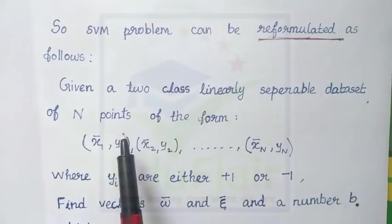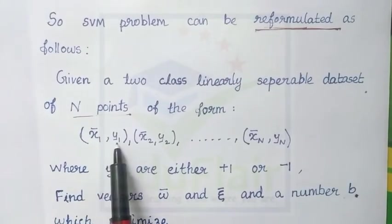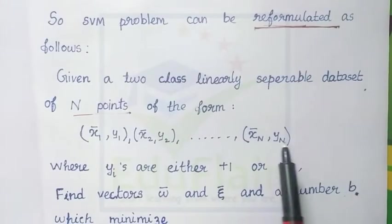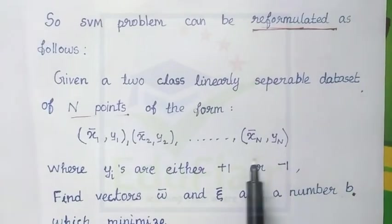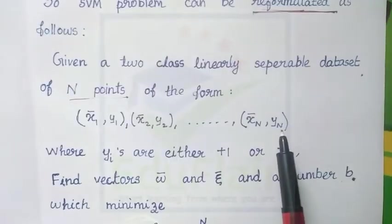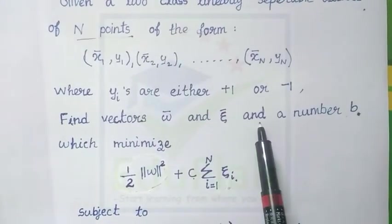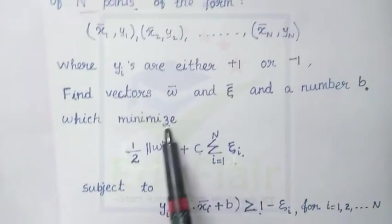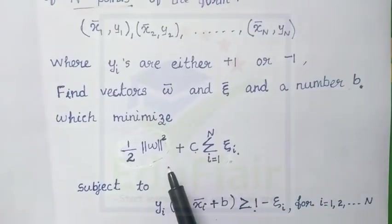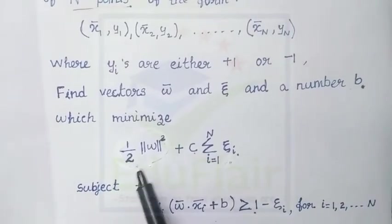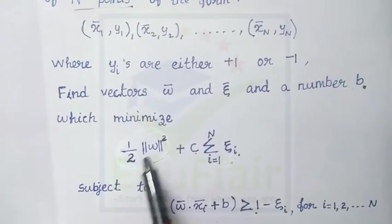We can now reformulate our SVM problem. Given a dataset of n points — that is x₁,y₁; x₂,y₂; ... xₙ,yₙ — where x₁, x₂, ..., xₙ represent the data points and y₁, y₂, ..., yₙ represent the class labels (positive or negative sample). We need to find vector ω, slack variables ψ, and scalar b. In the previous video, to maximize the margin we minimized ‖ω‖²/2.